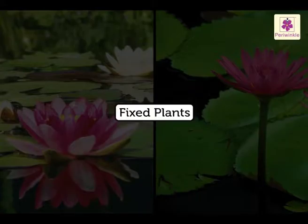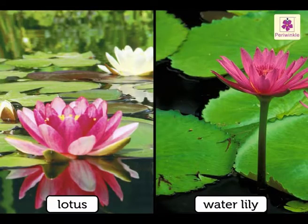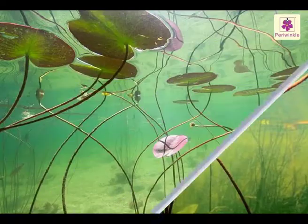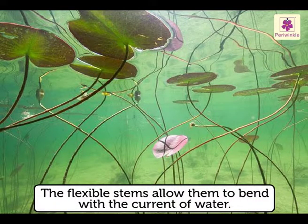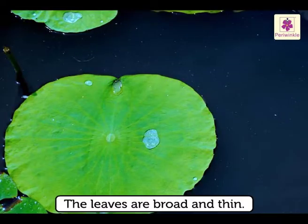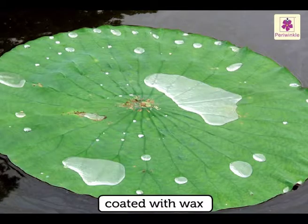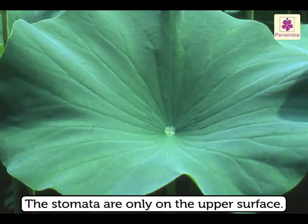Fixed plants. Lotus and water lily have their roots fixed to the soil at the bottom of the pond. Their stems are long, slender and filled with air cavities. The stems are flexible, which allows them to bend with the current of water without getting damaged. The leaves of these plants are broad and thin so they float easily on water. They are also coated with wax, which prevents them from decaying as they are half immersed in water. The stomata are only on the upper surface.